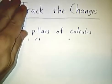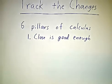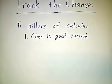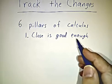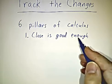Six pillars of calculus. The first was close is good enough, the idea that we do approximations and then get better approximations and better approximations. So instead of getting an answer in one fell swoop, we do successive approximations.